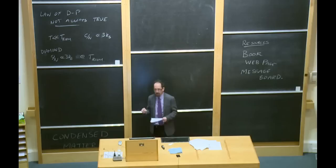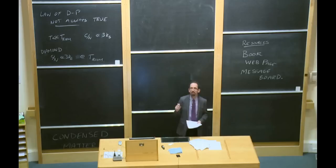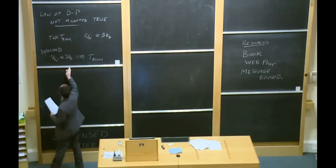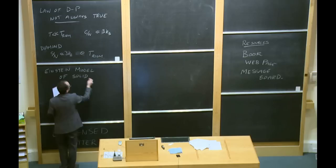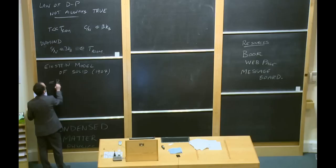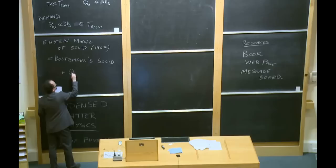This achievement by Einstein is actually one of the most important things he ever did — way up there with relativity or the photoelectric effect. Einstein's model of a solid, from 1907, is actually exactly the same as Boltzmann's model, plus one ingredient: quantum mechanics. The Einstein model equals the Boltzmann model of the solid, plus quantum mechanics.